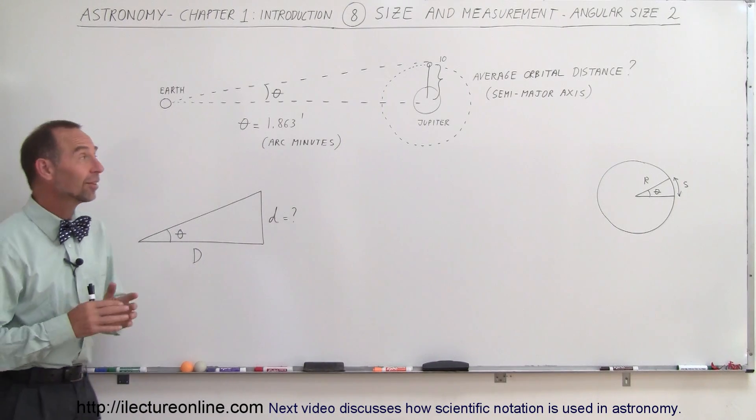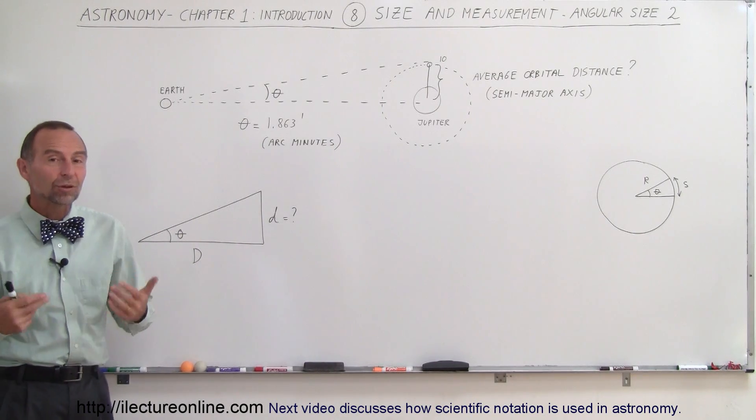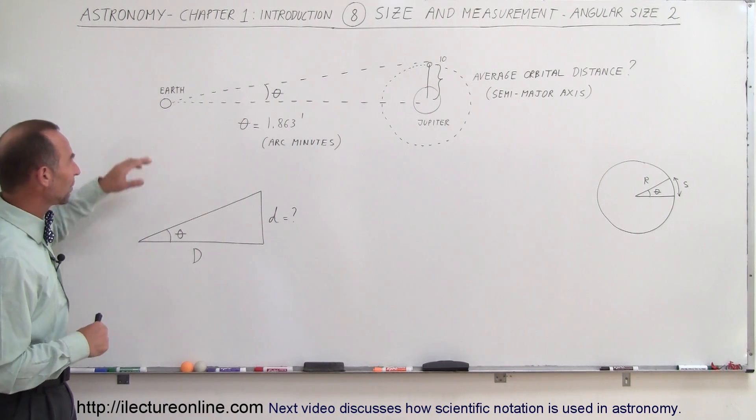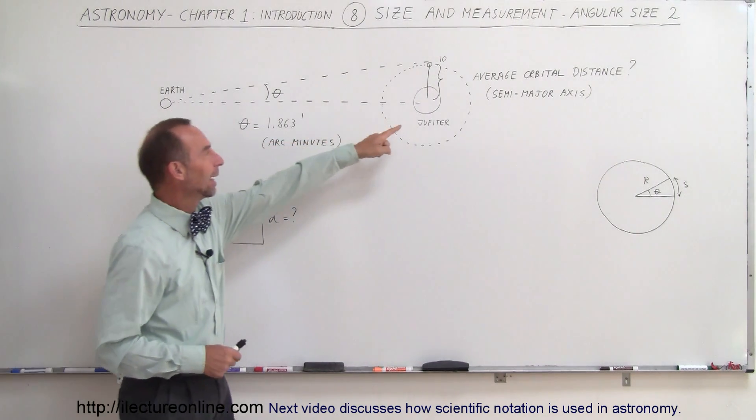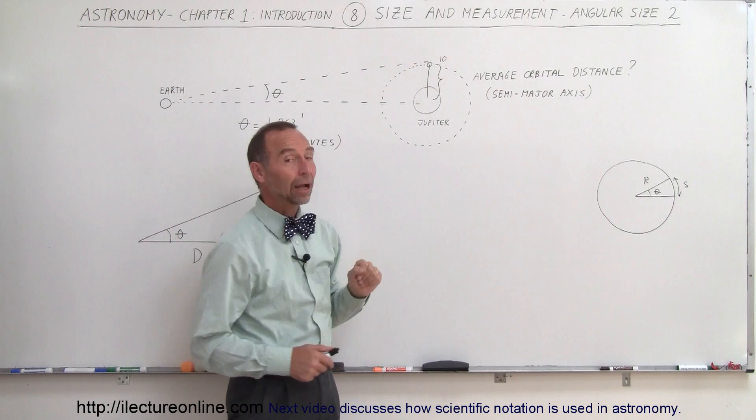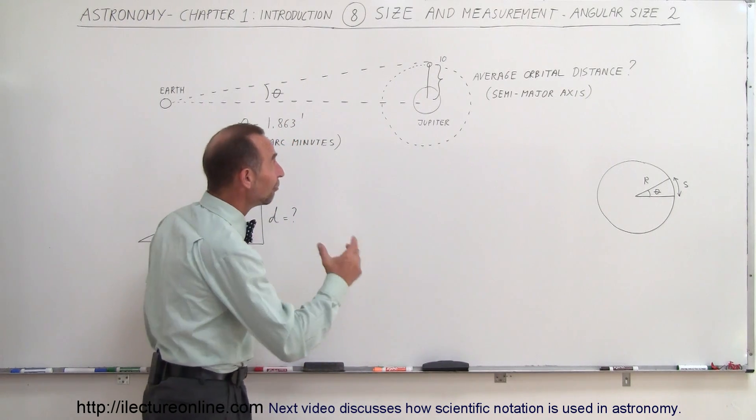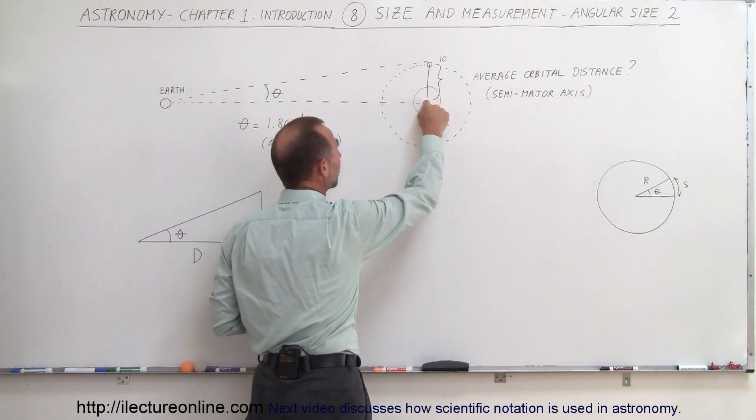Welcome to Electron Online and now let's take a look and see how we use angle-measure in astronomy. Let's say for example that we're observing Jupiter and its closest large moon Io and we're wondering how far away is Io from Jupiter.